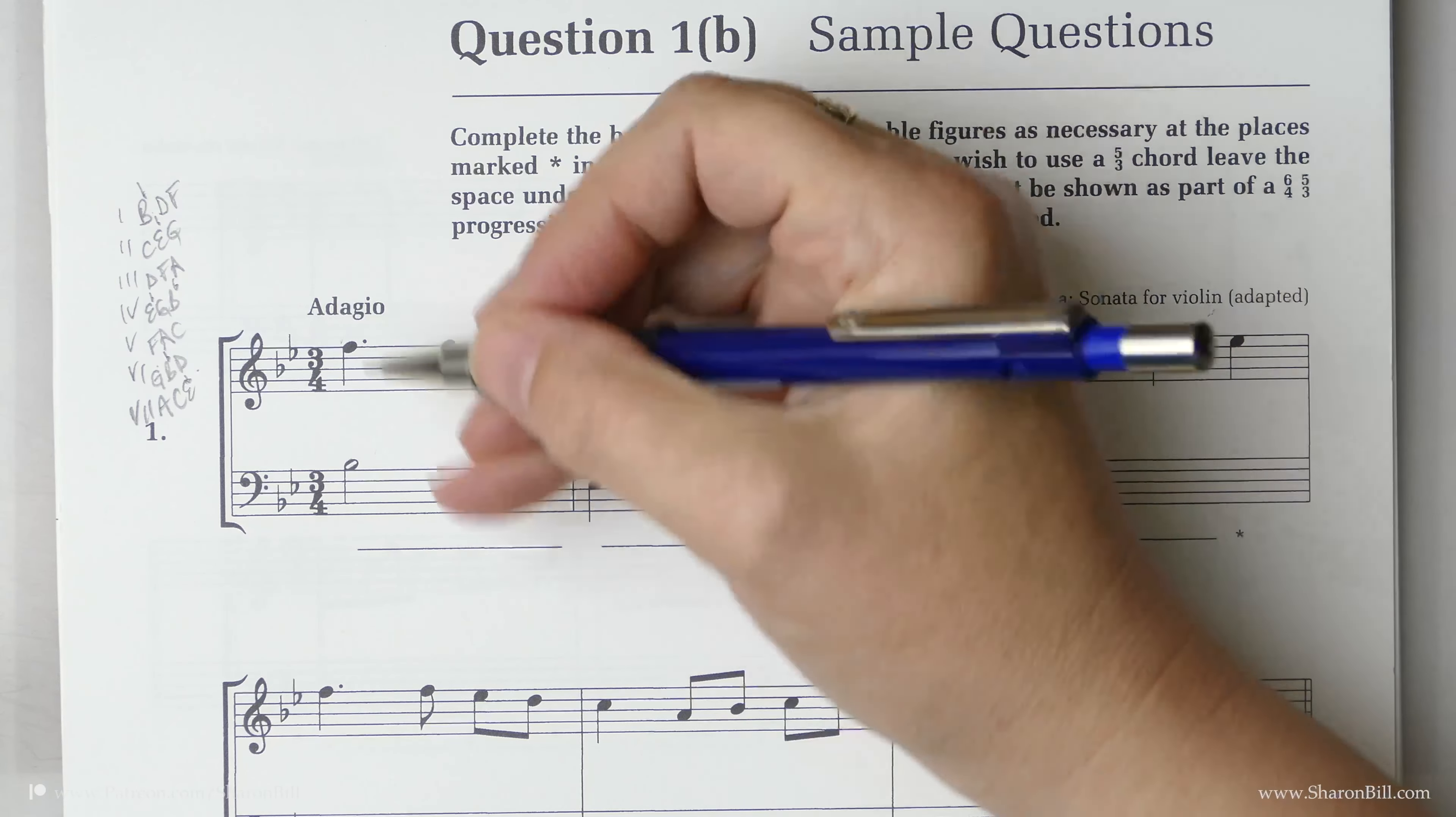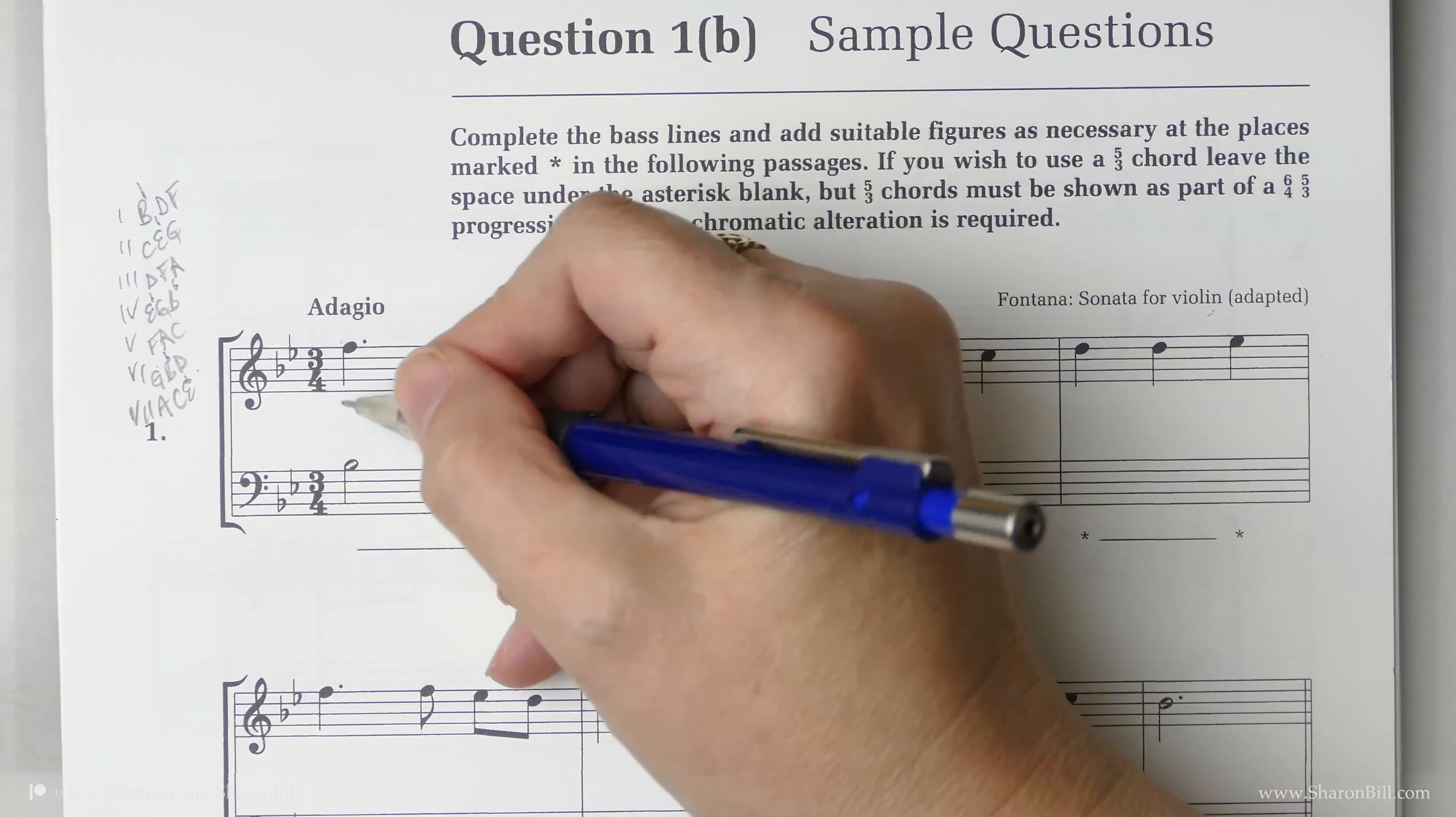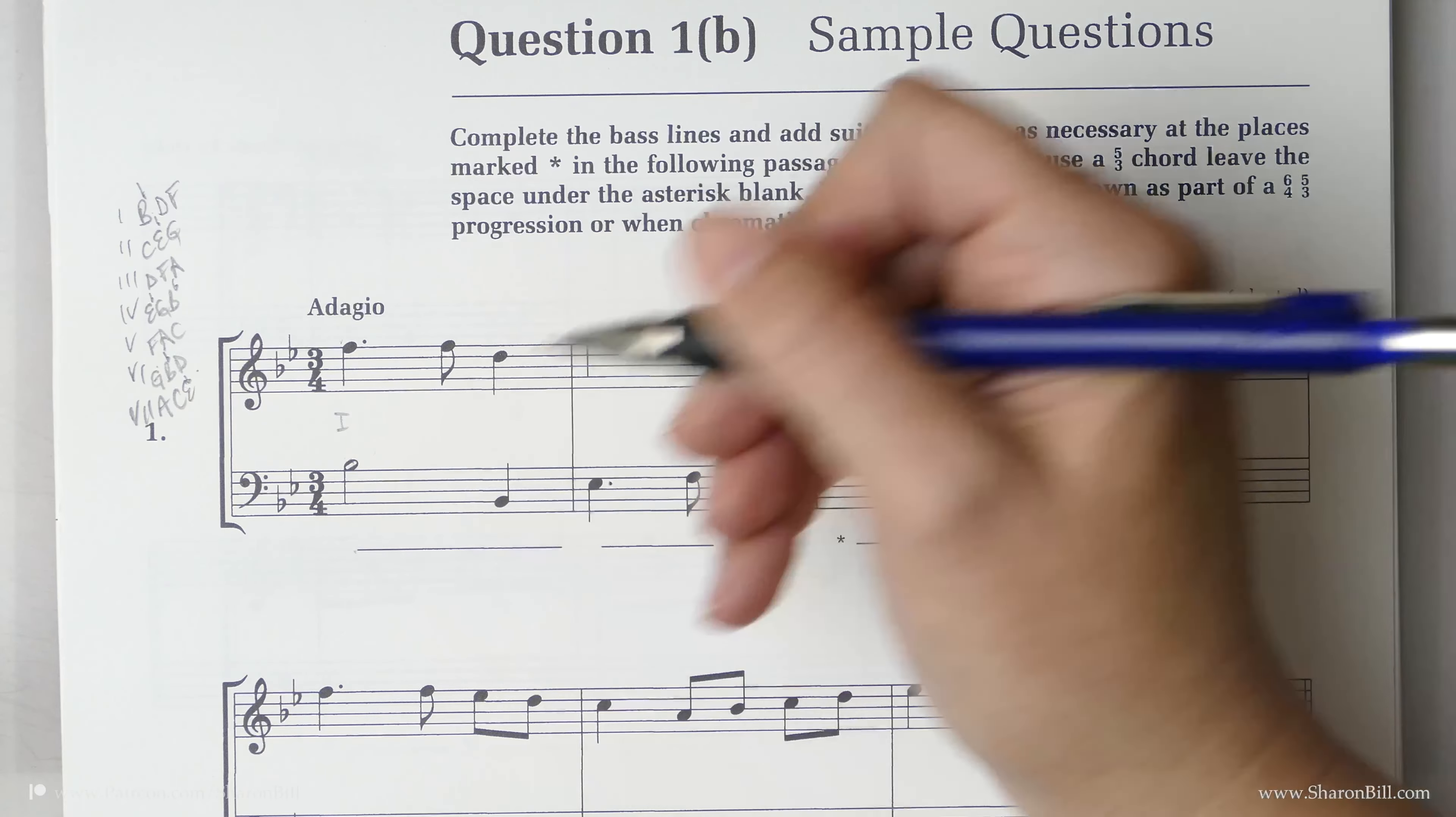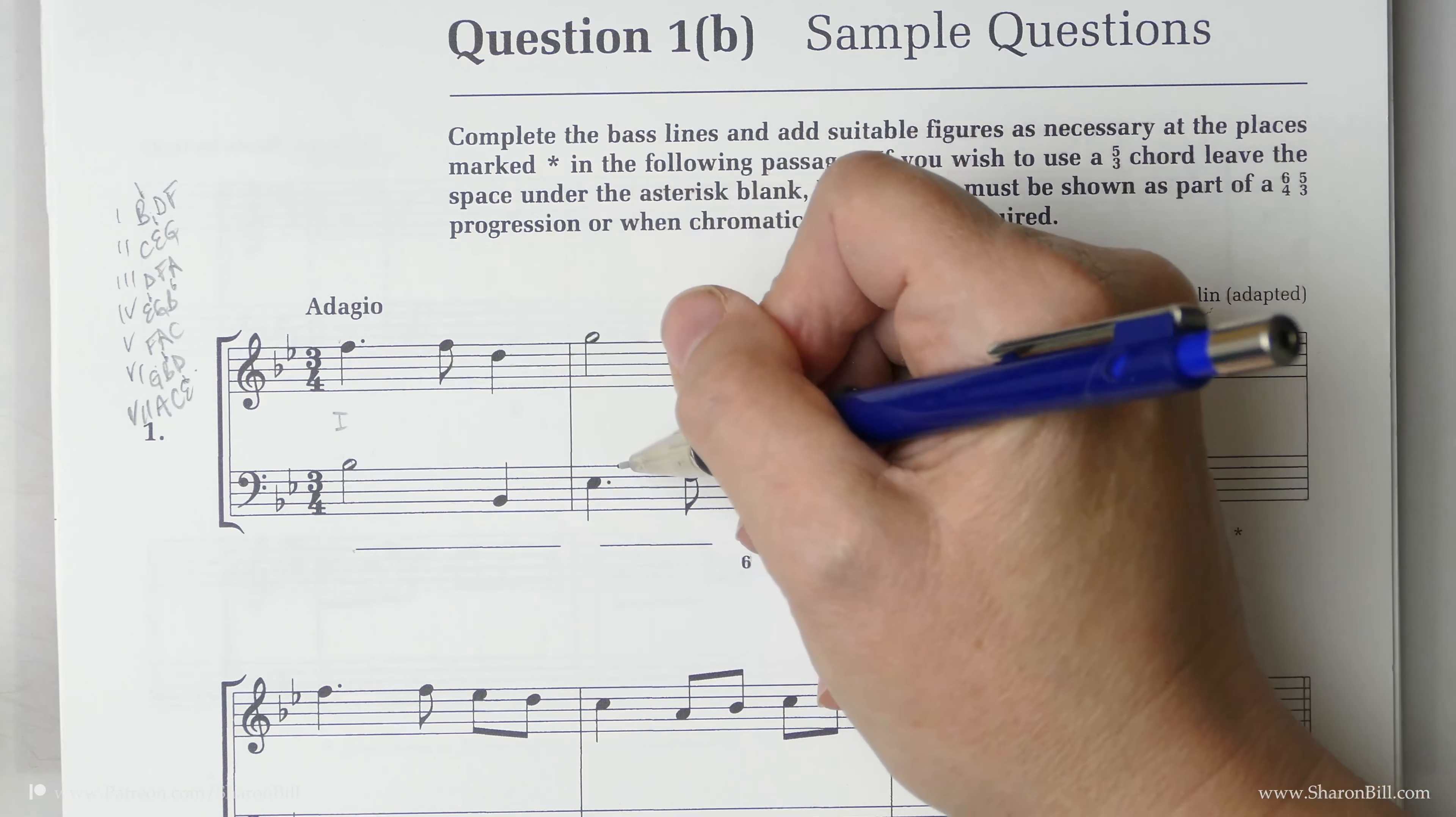So we can see that we've got a chord one here: B flat D F, that's definitely a chord one. I'm going to write the chords here. I ordinarily put them there but we need this space leaving for the figured bass don't we, so I'm just going to put my chord options here out of the way.